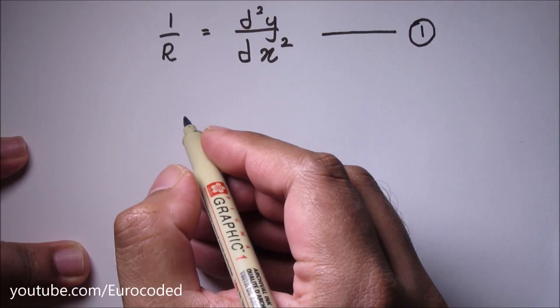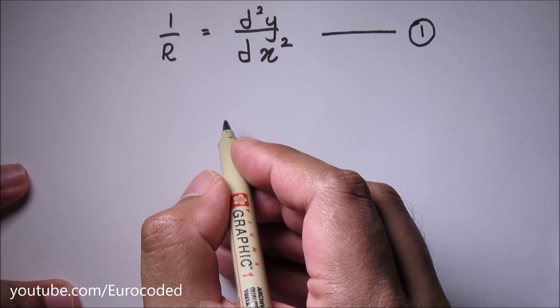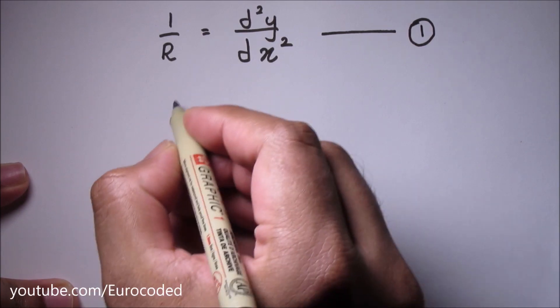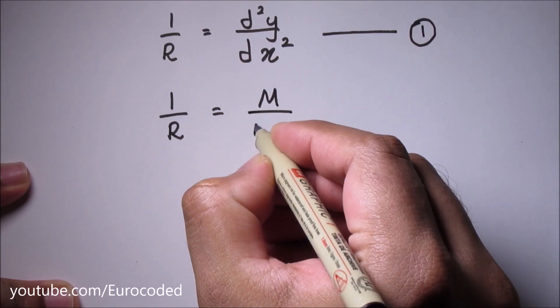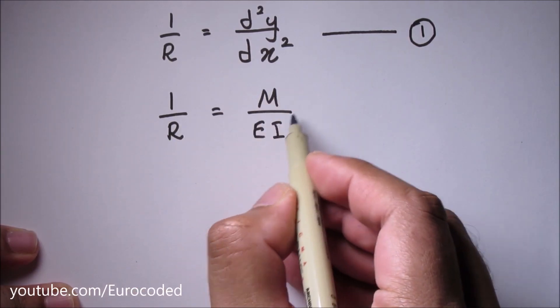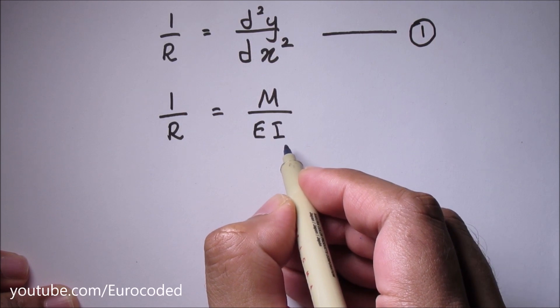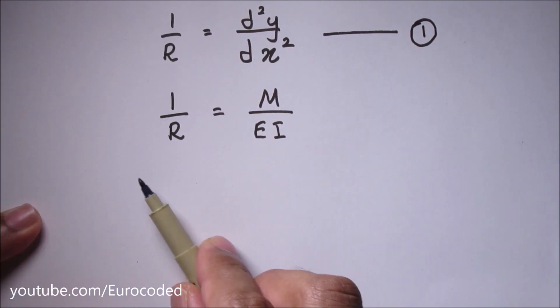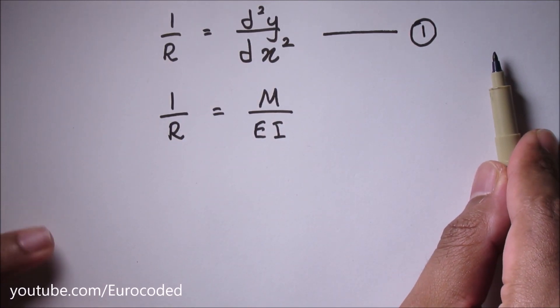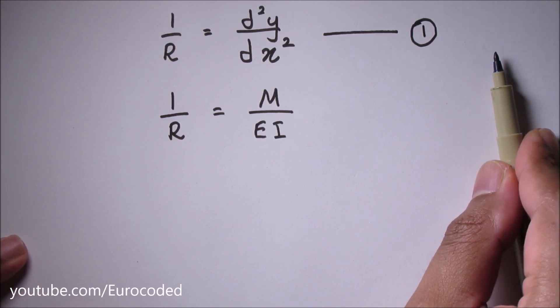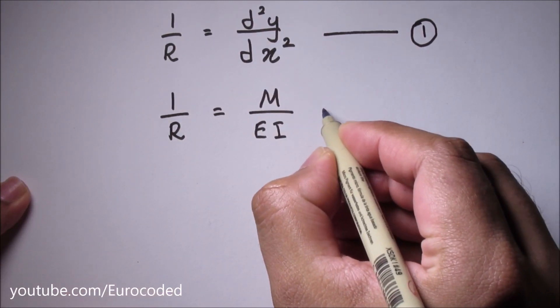A beam subjected to pure bending and when it is within the elastic range, the curvature of the neutral surface can be defined as 1 over R is equal to M over EI. R is the radius of curvature, M is the bending moment, E is the modulus of elasticity, I is the second moment of area about neutral axis. If you want to know how to develop this equation, then please click on this YouTube card here or follow the link in the description box below. Let's call this equation 2.